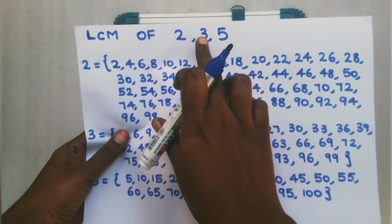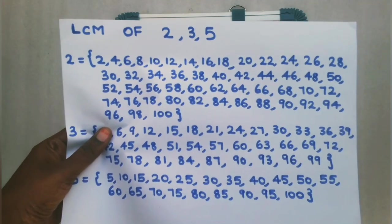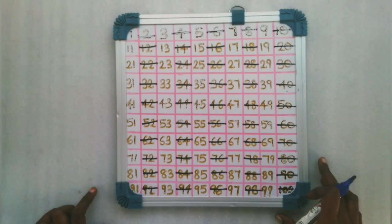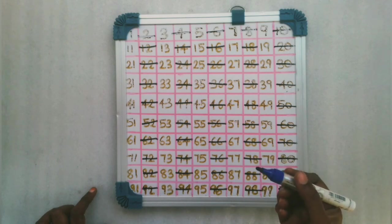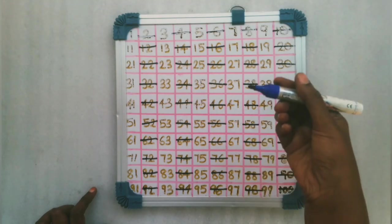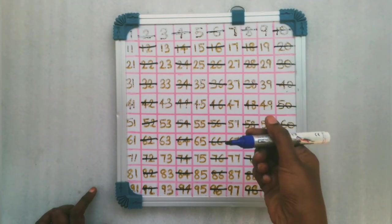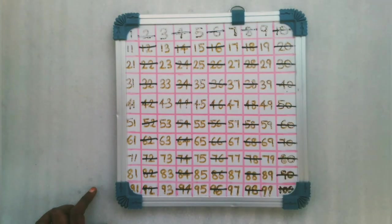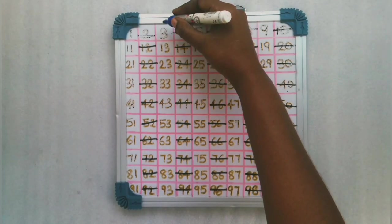Next, we are going to draw a vertical line for all multiples of 3 with blue color. That is the 3 times table.